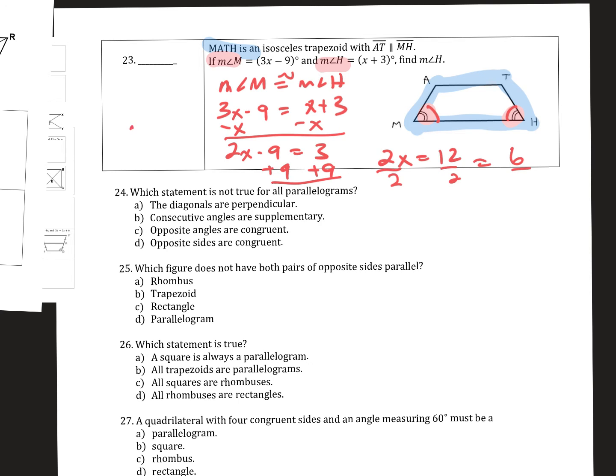Is that my answer? Well, x is 6, but look, they want us to solve for the measure of angle H. So we've got to plug that in. Measure of angle H is x plus 3. So plug in 6 plus 3. Well, that's 9.